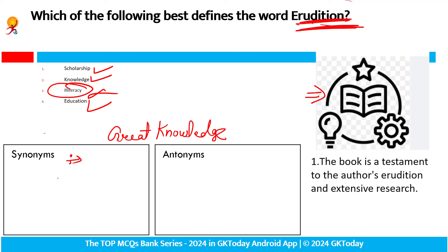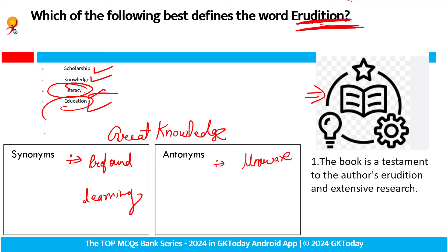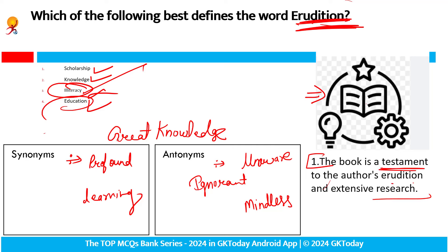Synonyms agar hum baat karayein — great knowledge hai, profound hai, learning, education, scholarship. Antonym kya hoga iska? Unaware, illiteracy — yeh bhi iska antonym ho gaya. Mindless, ignorant, inexperienced, uninitiated. So the book is a testament to the author's erudition and extensive research. Vah proof hai author ki knowledge ka aur extensive research ka. Erudition ka meaning hota hai knowledge.